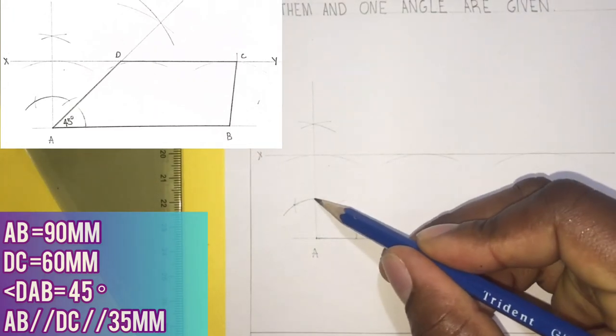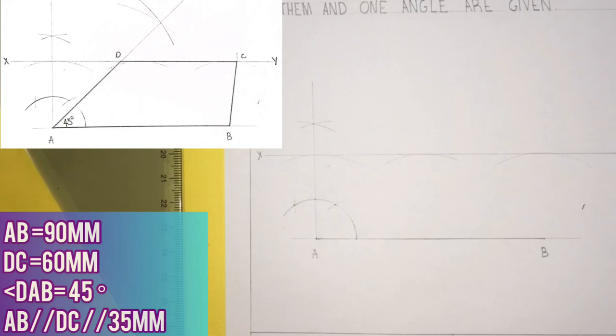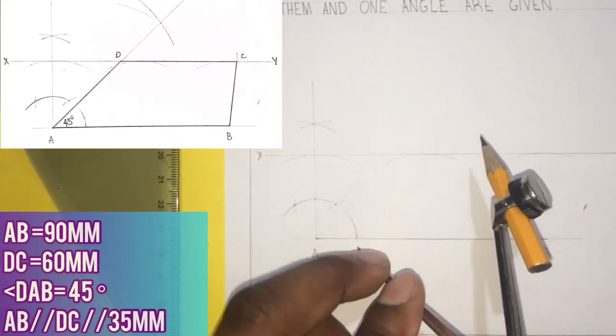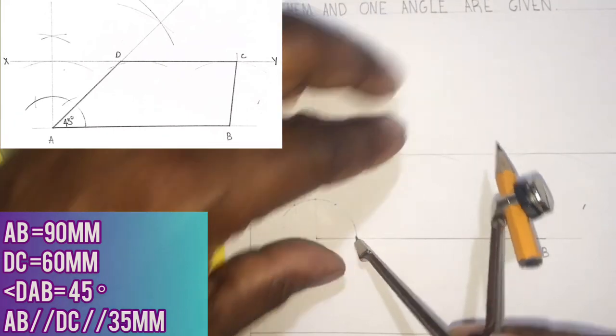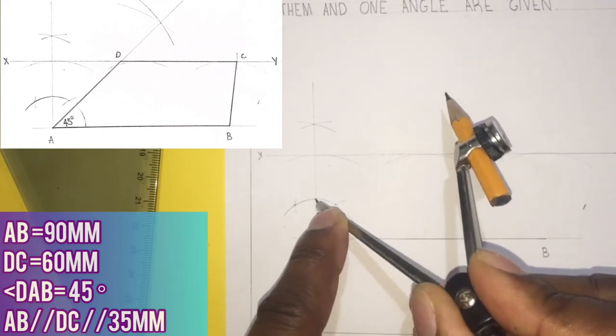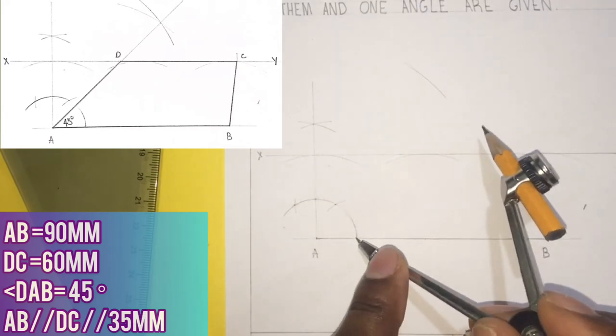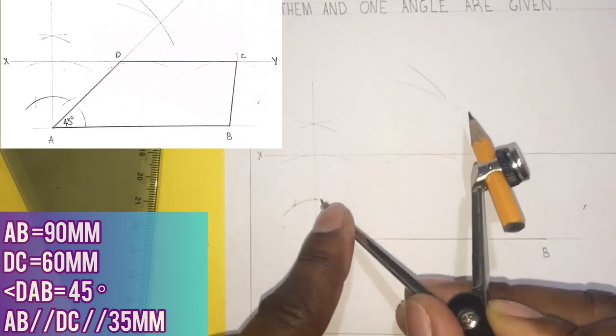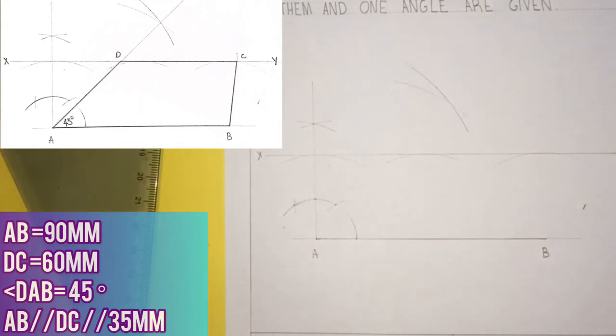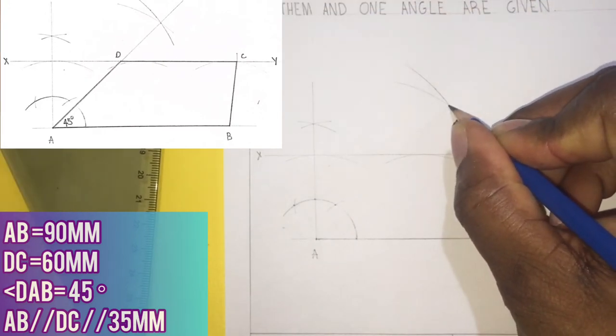So I will now need to bisect this angle to get my 45 degrees. In order to do so I will open my compass to a convenient radius and I will put my compass at this point and also this point. Now where the arcs intersect right here, I will draw a line to A.